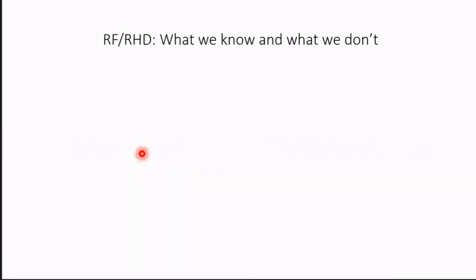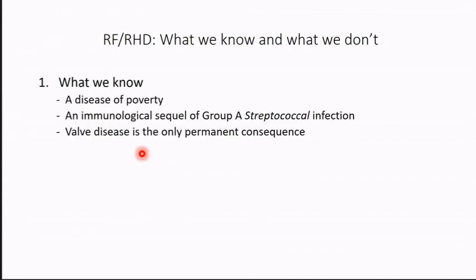What I want to do in the next few minutes is look at the data — the science available right now in rheumatic heart disease — and it's basically a critique of what we've been doing and what we should be doing. I'll start by saying what we really know about the disease, and that's precious little.